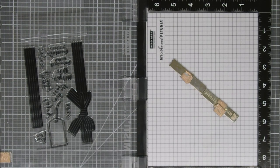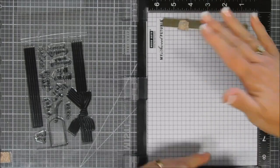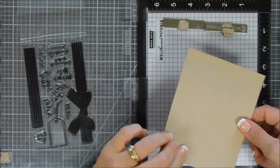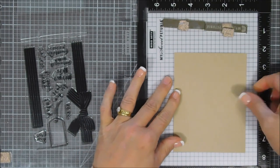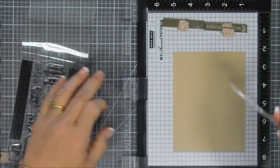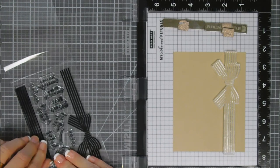I'm bringing in my Misti, my stamp positioner, and we're going to be using some oatmeal cookie cardstock. I have a panel that is a card front size. I'm going to lightly tack it with my tape runner to my Misti, and then we're going to stamp that beautiful bow. It's pretty much a solid image, and so I thought the Misti would help me stamp it.